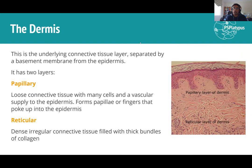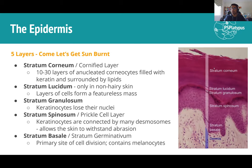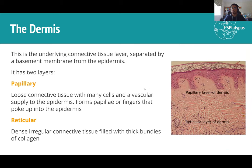Under the epidermis is the dermis — a connective tissue layer with two types. The papillary layer is loose connective tissue where blood vessels run and specialized cells are found; it forms finger-like projections (dermal papillae) that interdigitate with the stratum basale and spinosum. The reticular dermis underneath is much denser, filled with large bundles of collagen for structural integrity.